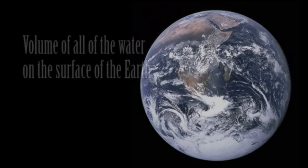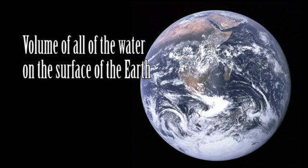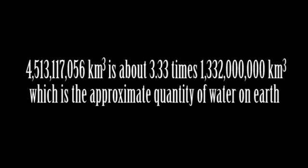Now, all the surface water on the Earth, including the world's oceans, holds approximately 1,332,000,000 cubic kilometres of water, which accounts for around 80% of all water on Earth. There are approximately 266,400,000 additional cubic kilometres of water locked up in the ice caps, underground, and inside living creatures. Therefore, the amount of extra water required to flood the Earth to the height of Mount Everest is about 3.3 times the amount of surface water presently on Earth. So, where did all that extra water come from?